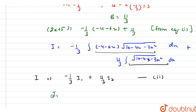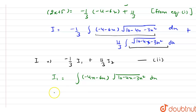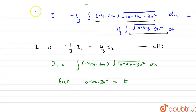Now consider I1. So I1 is the integration of (minus 4 minus 6x) into under root of (10 minus 4x minus 3x squared) dx. Now put 10 minus 4x minus 3x squared equal to t, and differentiate both sides with respect to x. So we have (minus 4 minus 6x) dx equals dt.